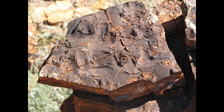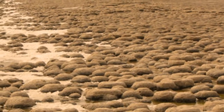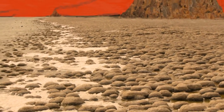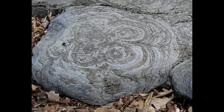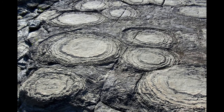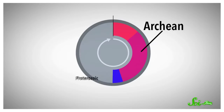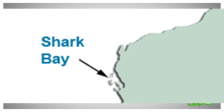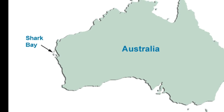Evidence of 3.5 billion year old bacterial ecosystems has been found in Australia. The Archean coast was home to mounded colonies of photosynthetic bacteria called stromatolites. Stromatolites have been found as fossils in early Archean rocks of South Africa and Western Australia. They increased in abundance throughout the Archean but began to decline during the Proterozoic. They are not common today, but they are still found in Shark Bay, Australia.